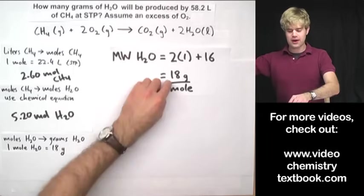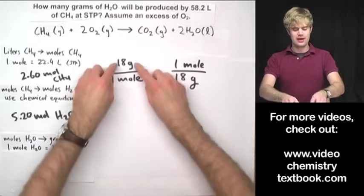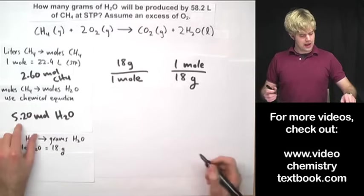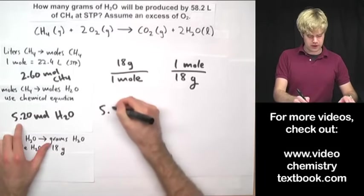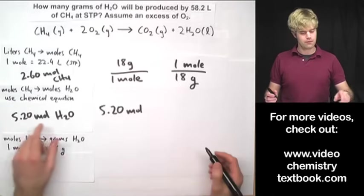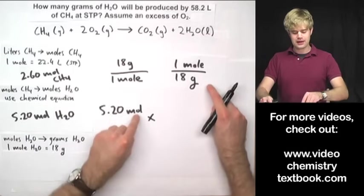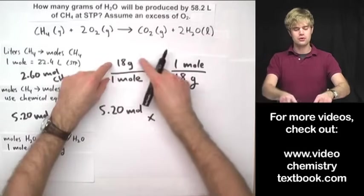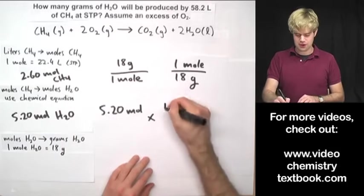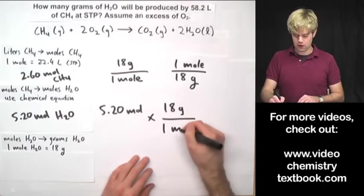Just as before, I can express this actually in two ways. I can do 18 grams over 1 mole or 1 mole over 18 grams. I'm going to start with 5.20 moles of H2O. Which of these conversion factors do I want to multiply by? I want to get rid of moles so I'm going to use this one here on the left so I have moles on the bottom to cancel out. So 18 grams divided by 1 mole.